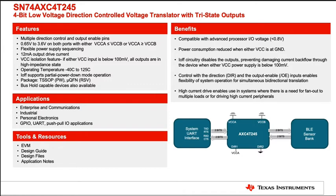The SN74AXC4T245 is TI's latest 4-bit low-voltage level translator device that is capable of supporting level translation requirements between 0.65 volts and 3.6 volts. In addition to supporting the industry's lowest voltage translation range, the device also supports a minus 40 to 125°C operating temperature range and flexible power sequencing enabling glitch-free power up.